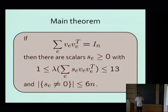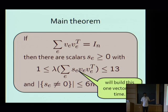Let me give some intuition for the proof. The strategy is to build our approximation step by step: start with the zero matrix, and at every step add some rank-one matrix — set some S_e to some non-zero value — in a manner that controls the eigenvalues. At the end, we'll end up in a situation where they're all between 1 and 13.